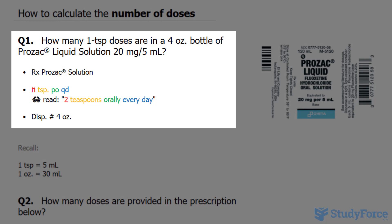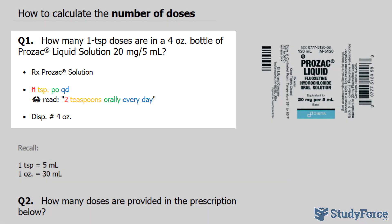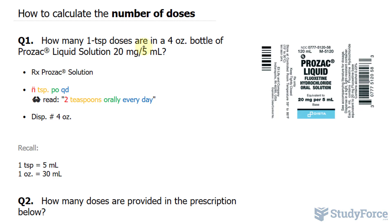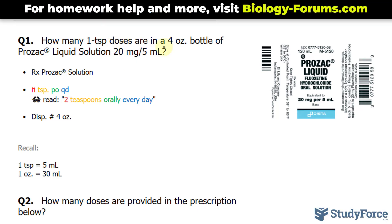The first question reads, how many one teaspoon doses are in a four ounce bottle of Prozac liquid solution that has a concentration of 20 milligrams per five milliliters? This concentration tells us that for every 20 milligrams of Prozac, there's five milliliters of solution.